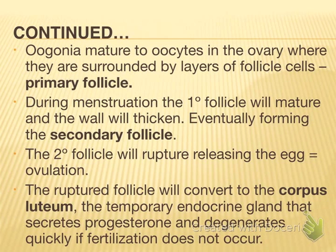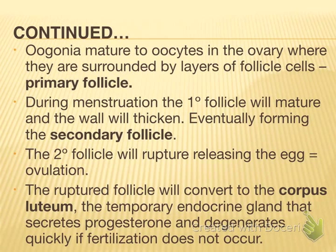The oogonia are produced from germinal epithelial cells on the outer lining of the ovary. They mature into oocytes — essentially a mature egg in the ovary — surrounded by layers of follicle cells that protect the forming egg. In the first stage, the egg is surrounded by what's called a primary follicle, just a layer of cells surrounding the oocyte. During menstruation, the primary follicle matures and its wall thickens, forming the secondary follicle, which will eventually rupture during ovulation.